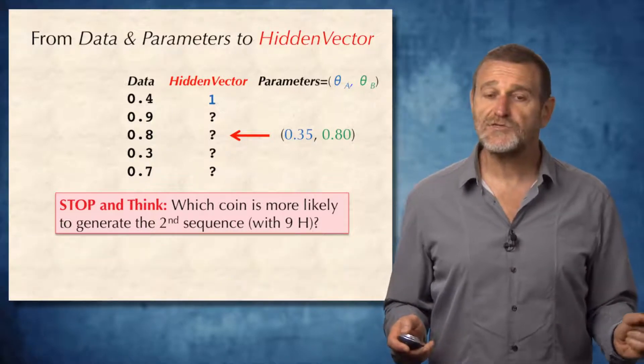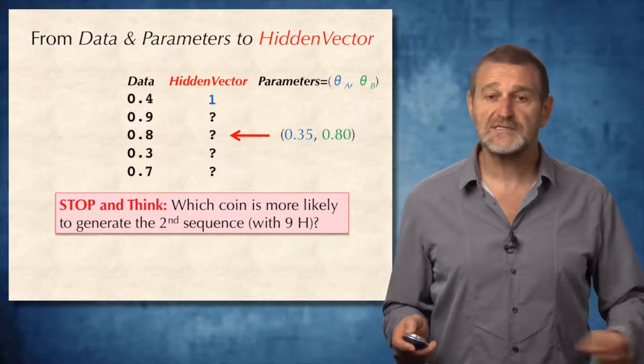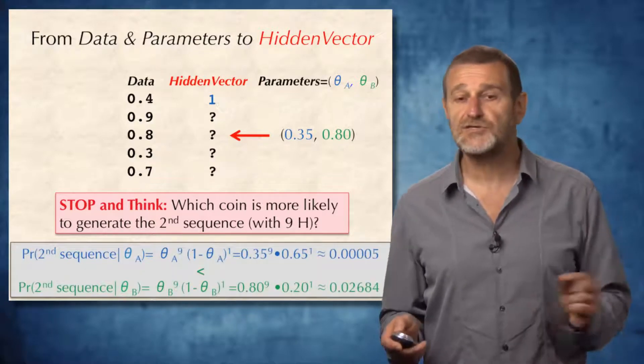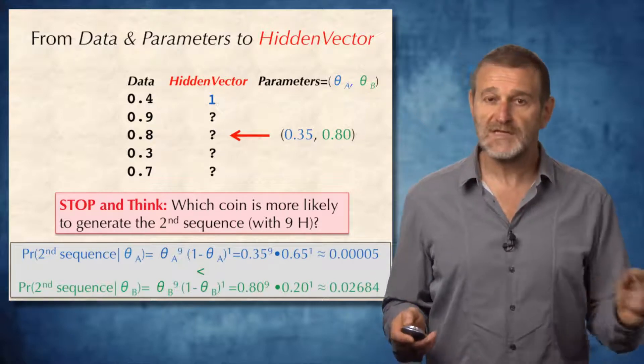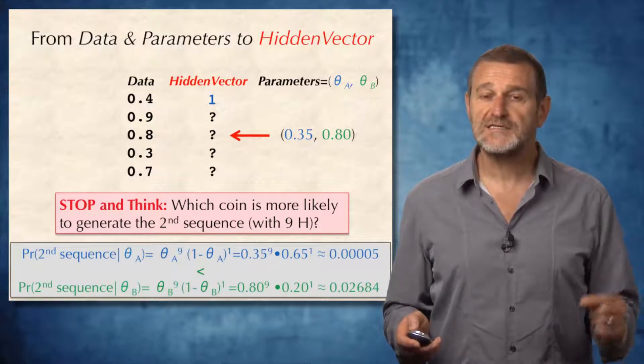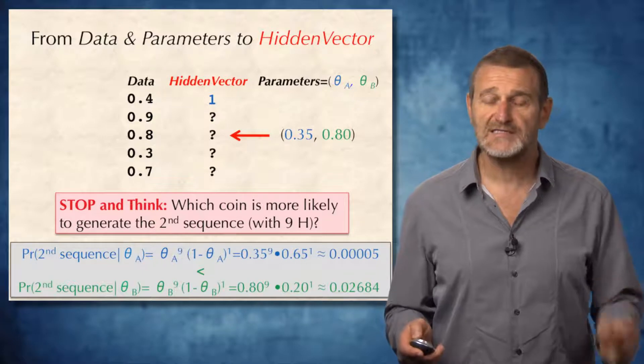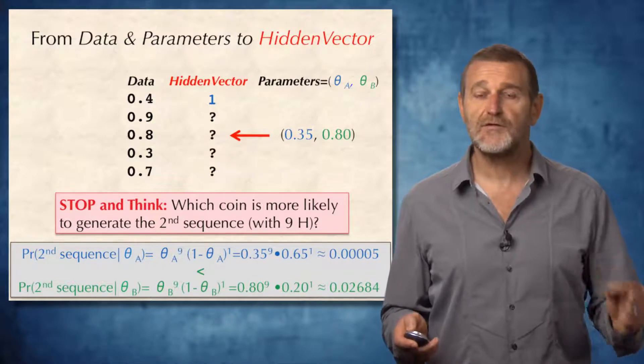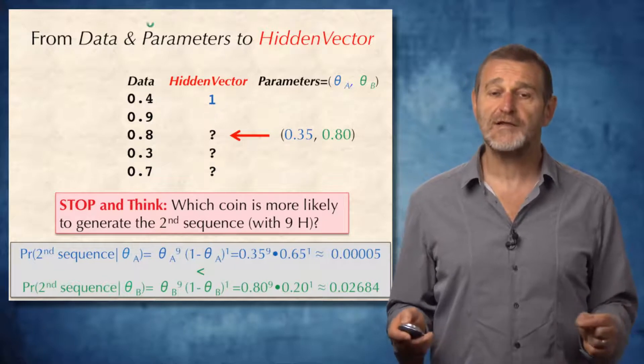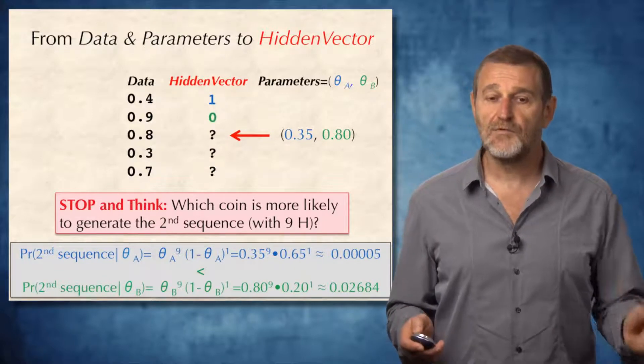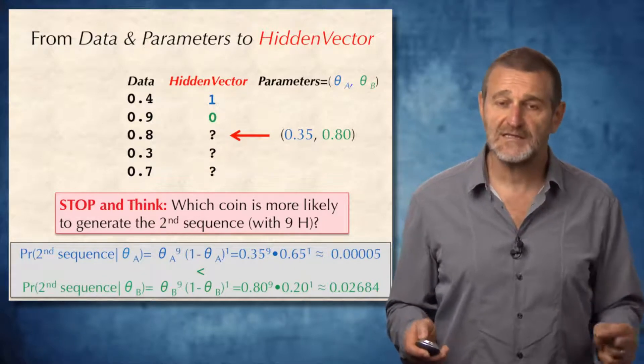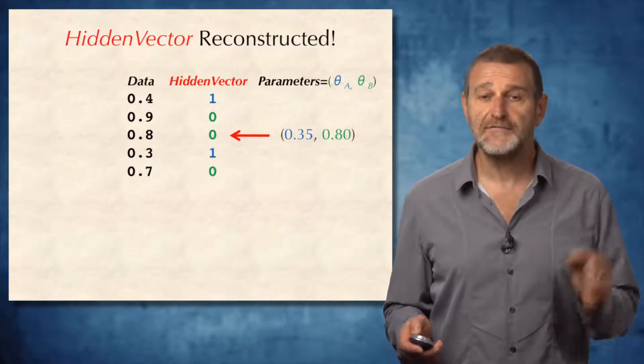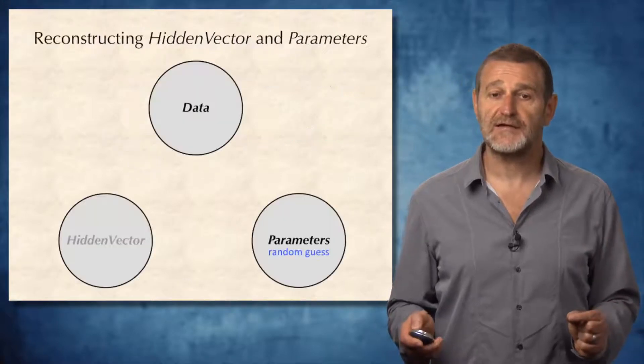Which coin is more likely to generate the second sequence with nine heads? Well, we do the same calculation. It turned out that probability of the second series of flips to be generated by the blue coin is much smaller than the probability of it being generated by the green coin. Therefore, the most likely coin for the second series of flips is green. By continuing this way, we can derive the hidden vector.